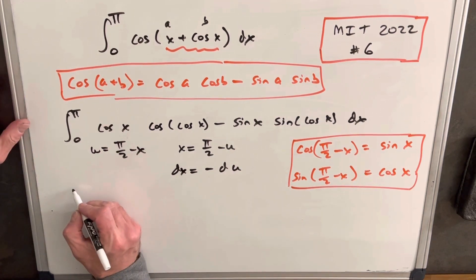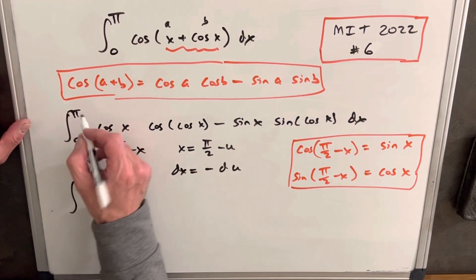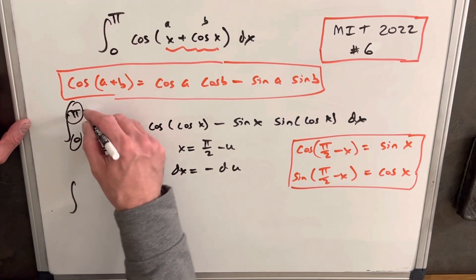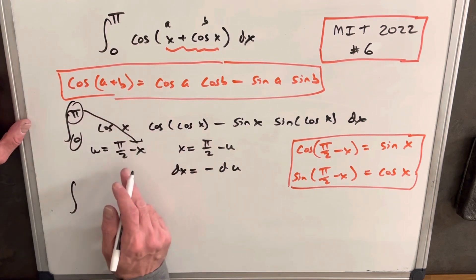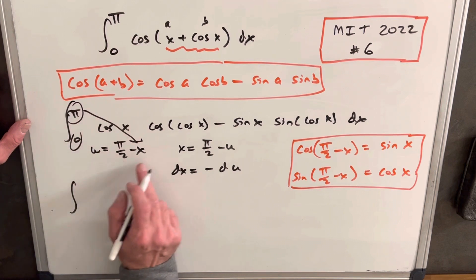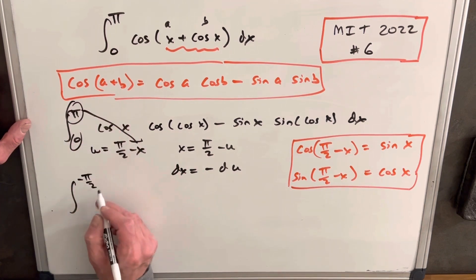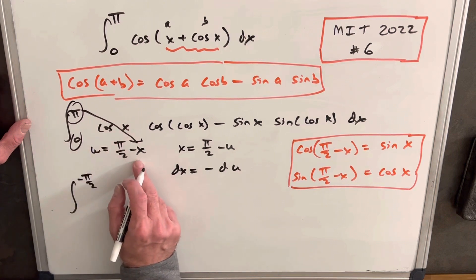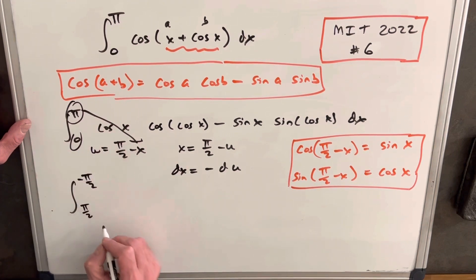Then we'll rewrite our integral. But first, let's change our boundaries. So we'll just plug those in here. Okay, so we do pi over 2 minus pi, plugging in our pi, it's going to be minus pi over 2. And then pi over 2 minus 0 is pi over 2.